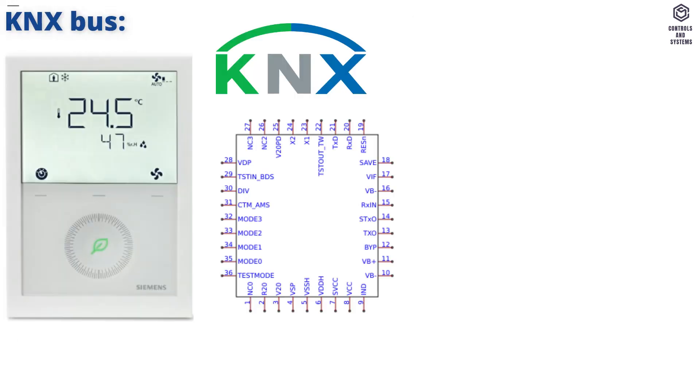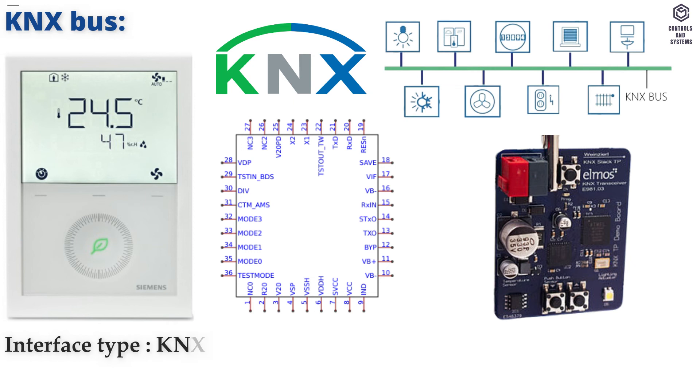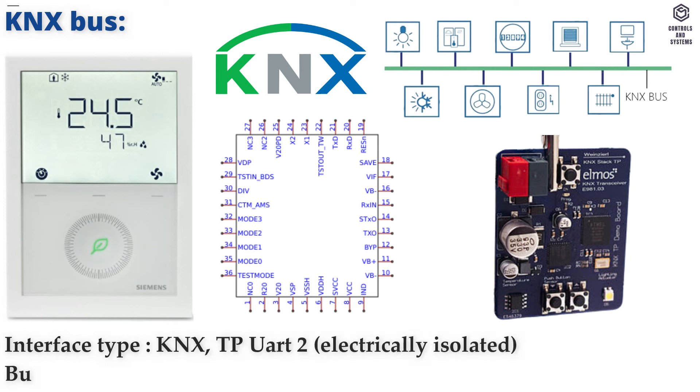KNX Bus: Interface type is KNX TPUART2, electrically isolated. Bus current is 5mA.